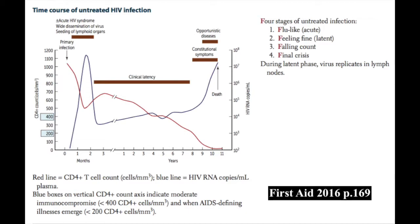During the acute phase, we see high CD4 lymphocyte counts and high viral titers as measured by P24 antigen. As we move from acute to latent phase, we see a stable CD4 count, the rise of anti-P24 and anti-GP120 antibodies, and a decline in actual virus in the serum — a decline in P24 antigen. This latent phase can last weeks, months, or even years.